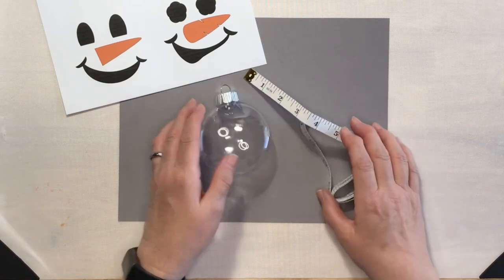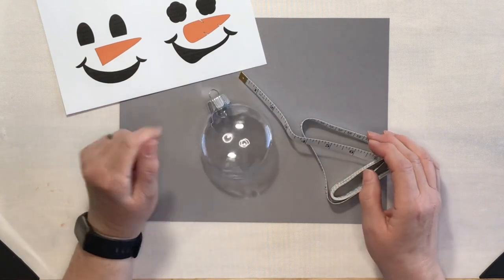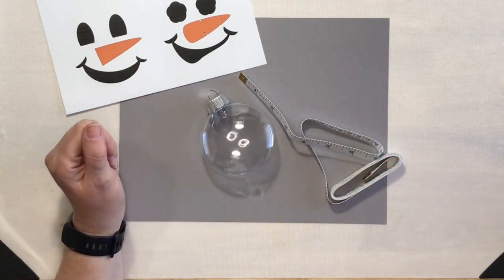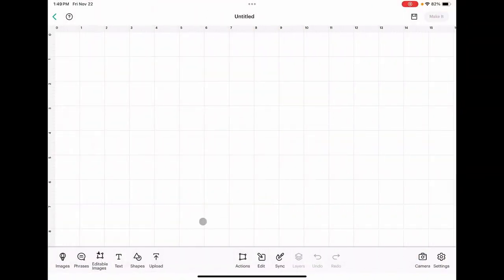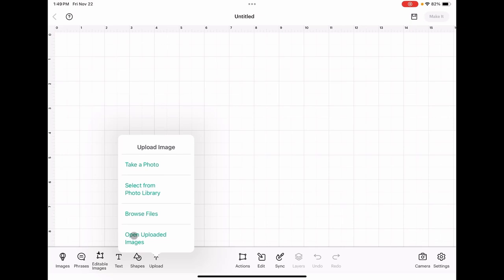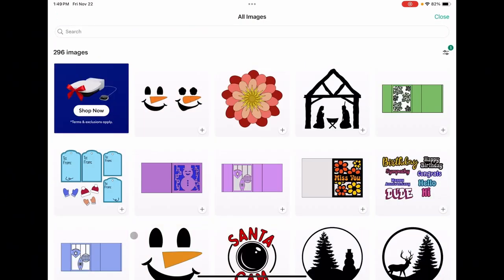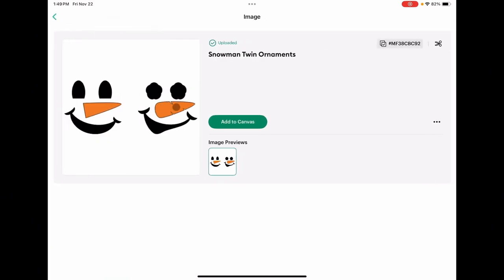So let's go ahead and jump into Cricut design space and get started on our project. All right, we are in Cricut design space on my iPad. And I have already uploaded the SVG file to design space. So I'm going to open uploaded images. I will choose my snowman twins ornament and add that to the canvas.